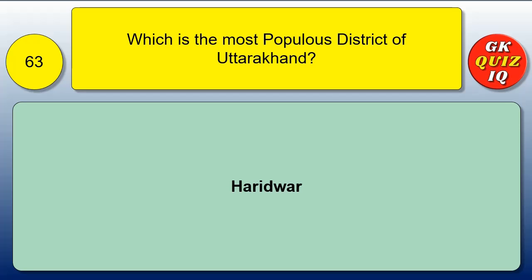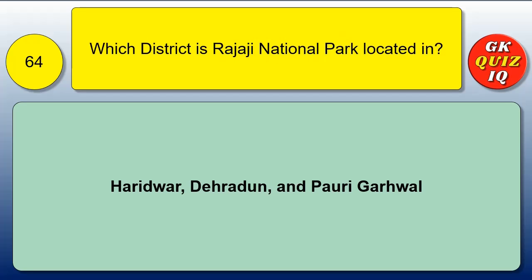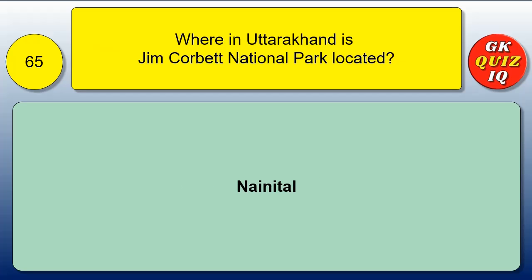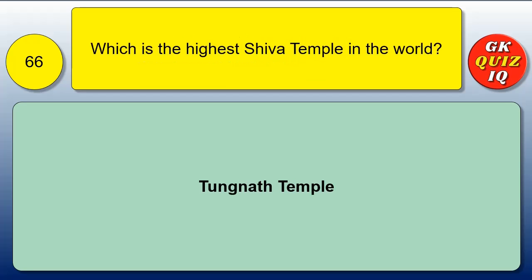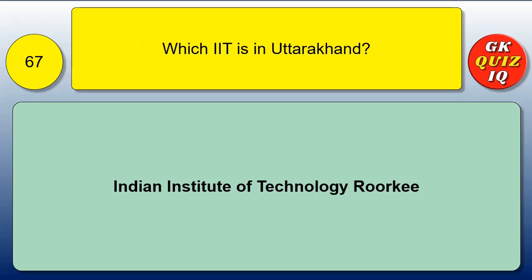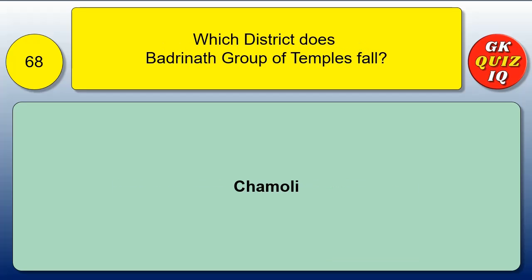Which is the most populous district of Uttarakhand? Haridwar. Which district is Rajaji National Park located in? Haridwar, Dehradun, and Pauri Garhwal. Where in Uttarakhand is Jim Corbett National Park located? Nainital. Which is the highest Shiva temple in the world? Tungnath Temple. Which IIT is in Uttarakhand? Indian Institute of Technology Roorkee. Which district does the Badrinath group of temples fall in? Chamoli.